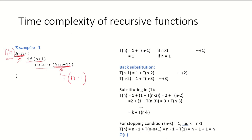So let's see how we can work this out. We know that T(n) is going to be: this part takes time 1 and this part takes time T(n-1). So if n is greater than 1, then T(n) = 1 + T(n-1). But if n is 1, it is just going to take time 1.